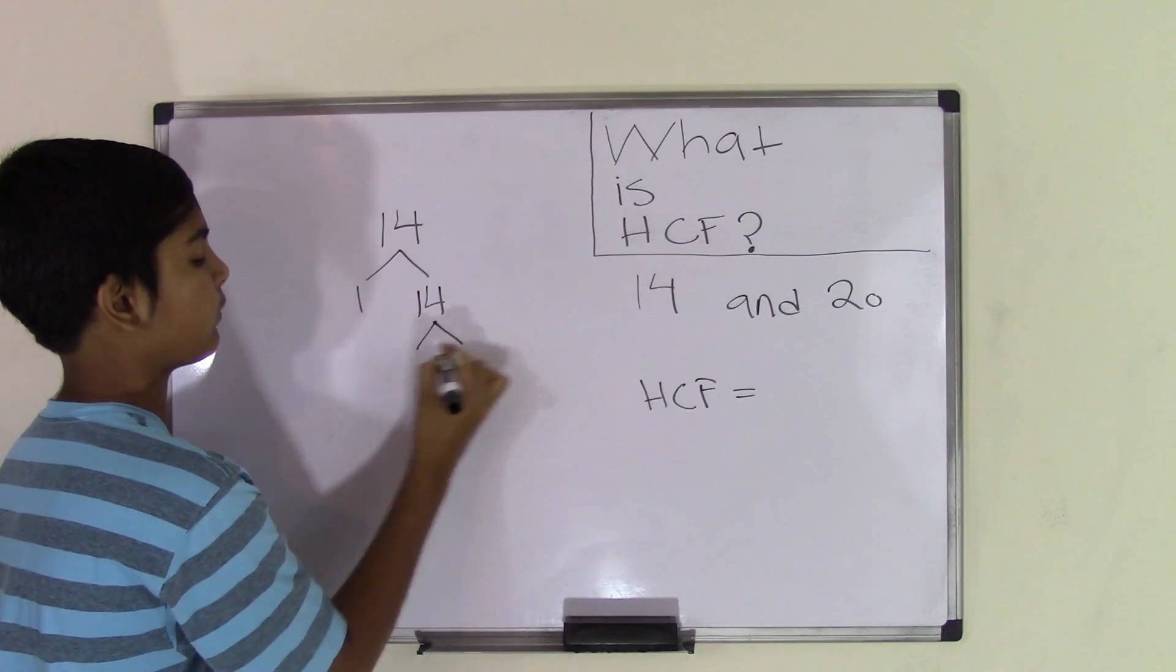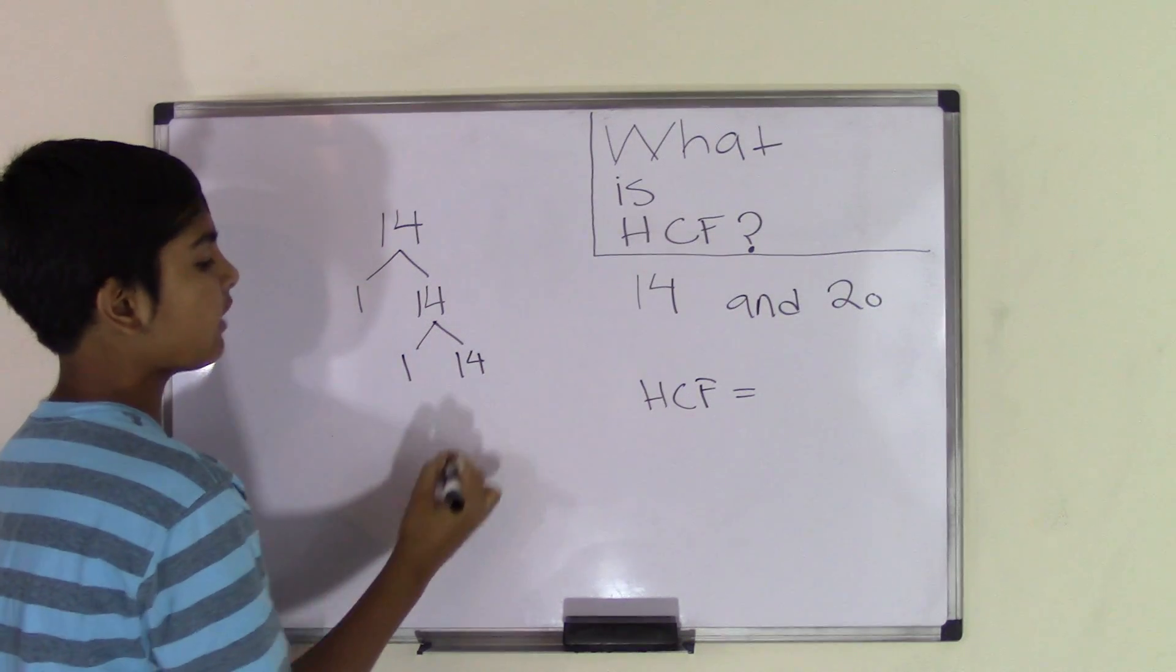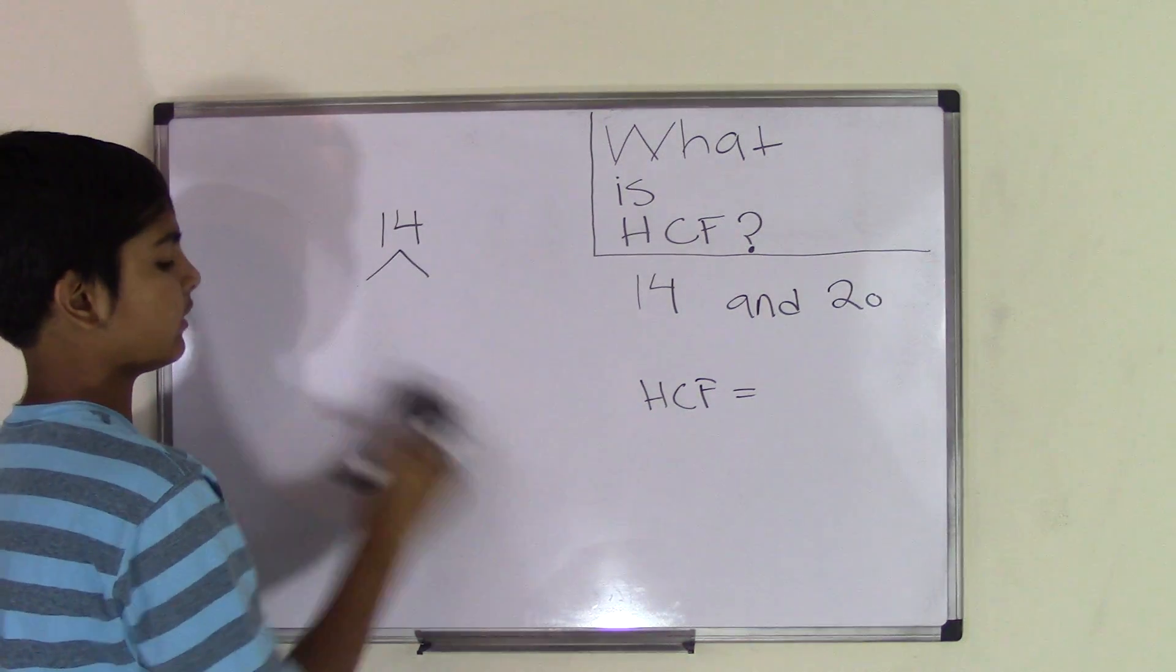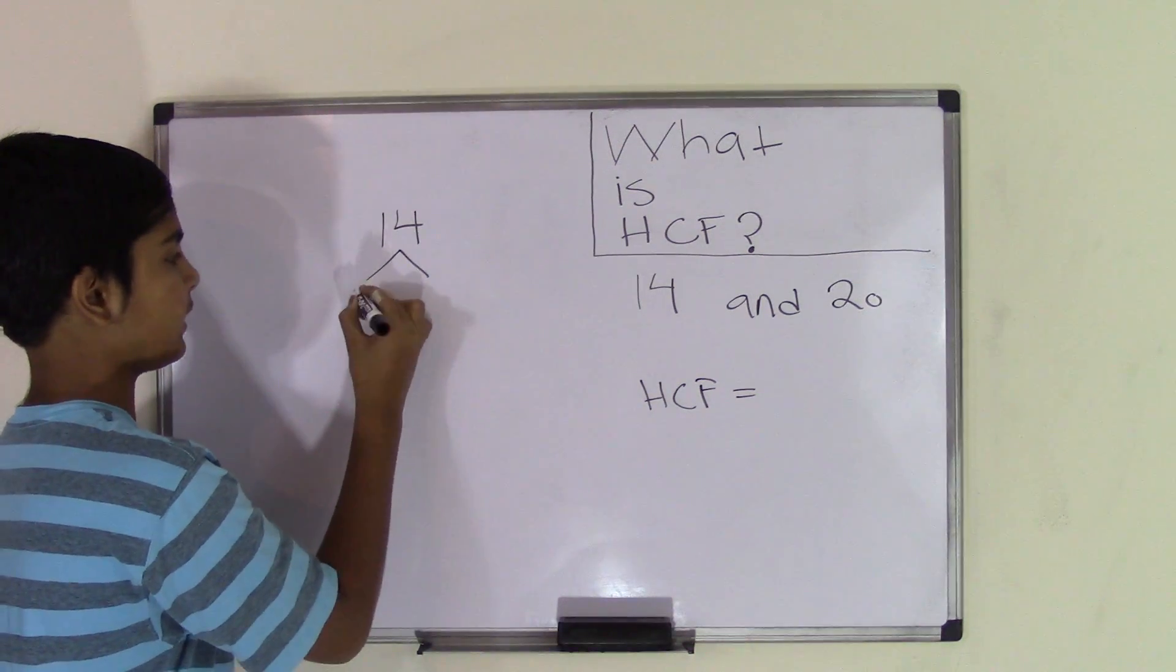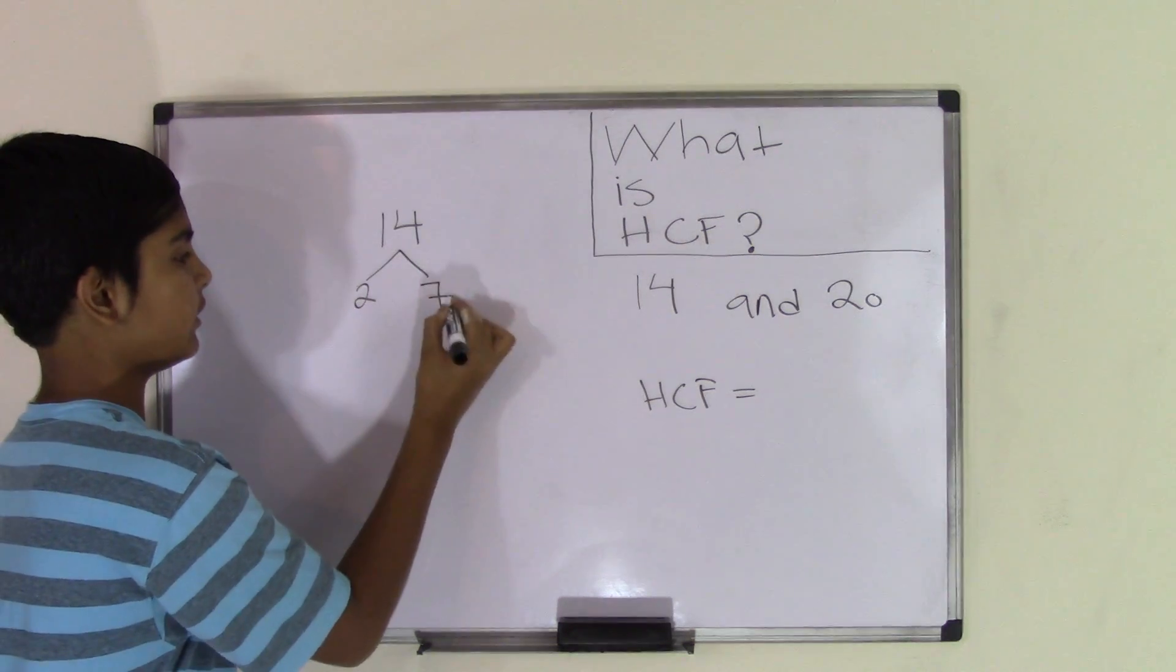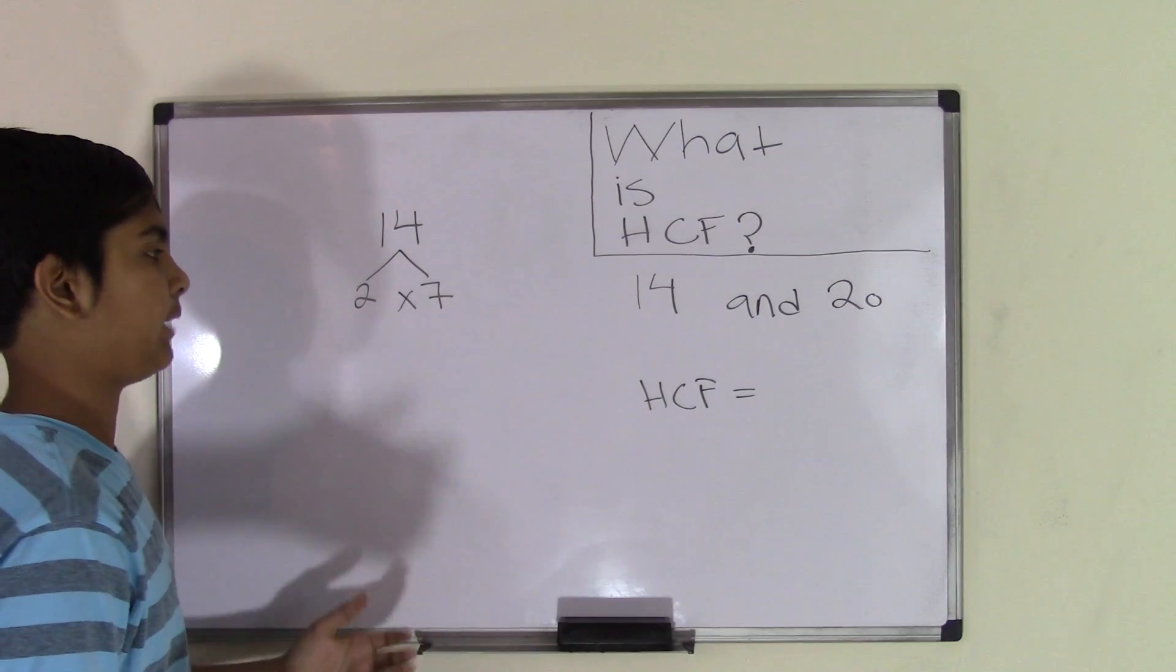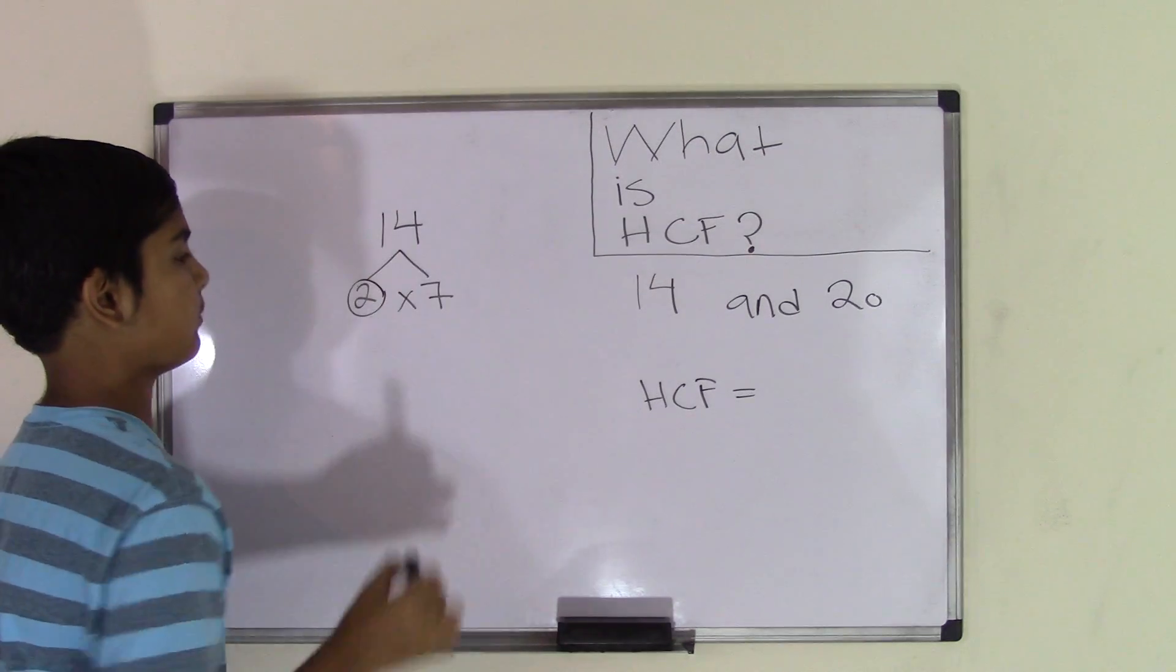And then we'd have to multiply 1 by 14 again, and that will keep going for infinity. So we start off by multiplying number 2 by 7. So 2 times 7 is 14. Now we circle all the prime numbers. The prime numbers are the number 2.